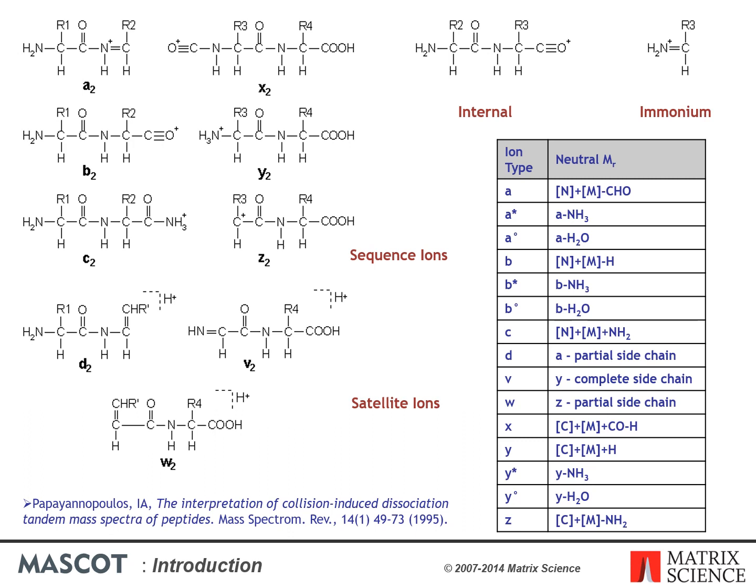This slide shows the most common fragment structures, and the table is a ready-reckoner that can be used to calculate the masses of particular ions. N is the mass of the N-terminal group, which is hydrogen for a free amine; C is the mass of the C-terminal group, which is hydroxyl for a free acid; and M is the sum of the residue masses. There is also a reference to a review by Janos Papayanopoulos, which provides an excellent introduction to the fragmentation chemistry of peptide ions in the gas phase.